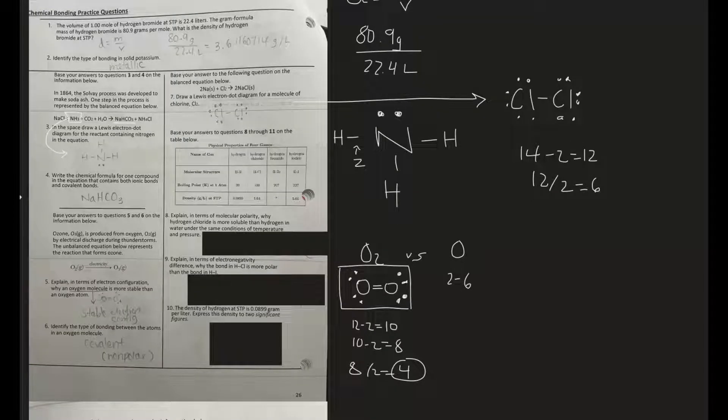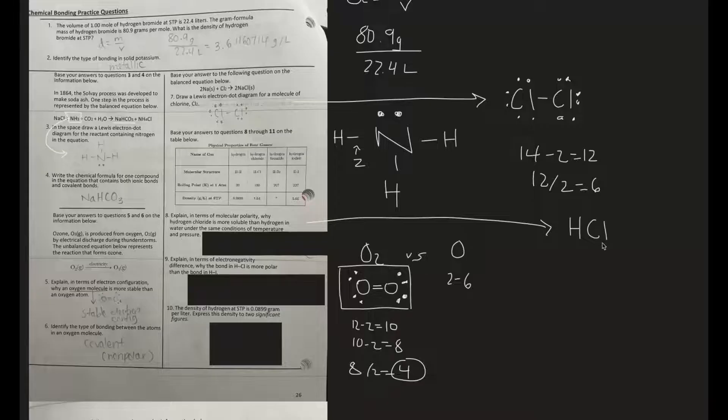Question eight: Explain in terms of molecular polarity why hydrogen chloride is more soluble than hydrogen in water under the same conditions of temperature and pressure. Let's take a look at hydrogen chloride. What exactly is hydrogen chloride written out as a chemical formula? You have hydrogen and then chloride. This is a polar molecule because their electronegativity differences indicate that, and it's not the same molecule either, so the distribution of their charges is not equal. Why is it more soluble than just hydrogen in water?